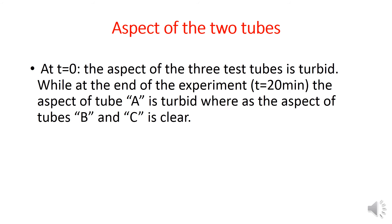Regarding the aspect of the test tubes: at t equals zero, the aspect of all three test tubes is turbid. At the end of the experiment, the aspect of tube A remains turbid, whereas the aspect of tubes B and C is clear. This means that digestion takes place in tubes B and C.